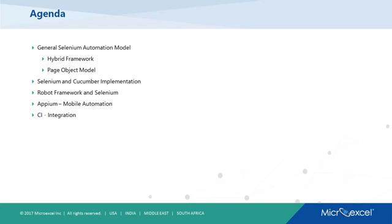Then I will give a brief introduction about Appium. Appium is a mobile automation tool — it's a little bit different than Selenium — but since it uses the same kind of API and same kind of functions, whoever is coming from a Selenium background will find it easy to learn the API and start coding.